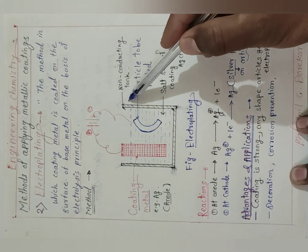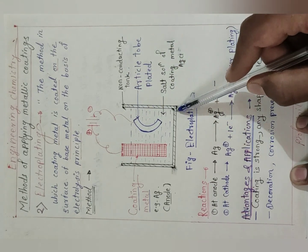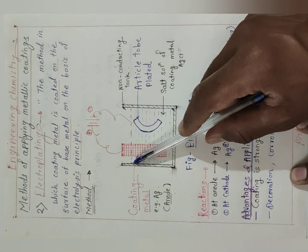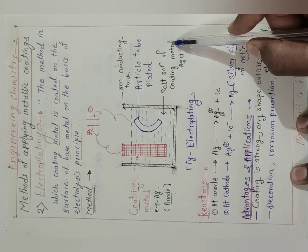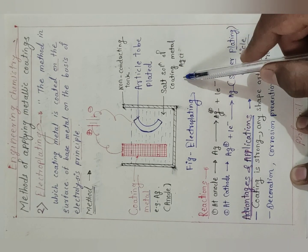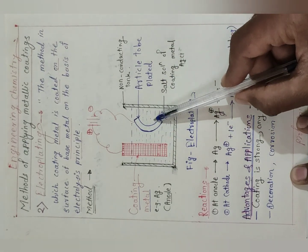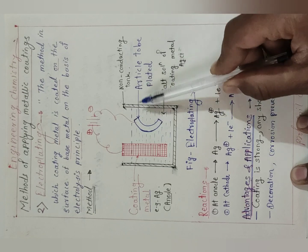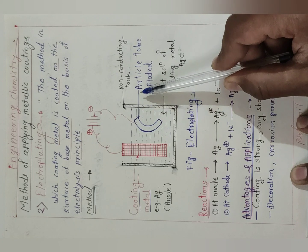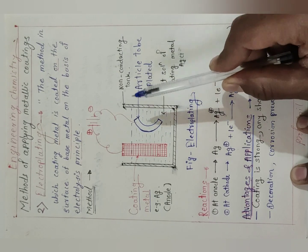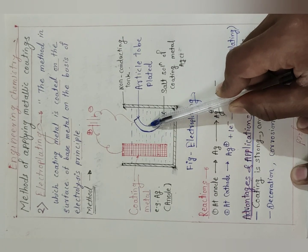For electroplating we require a non-conducting tank. In this non-conducting tank, take a salt solution of the coating metal. For example, here we are going to give a coating of silver, so the salt solution is AgCl. In this salt solution, a clean article is placed — this article is the base metal on which we are going to give the coating of silver. So this is the base metal.